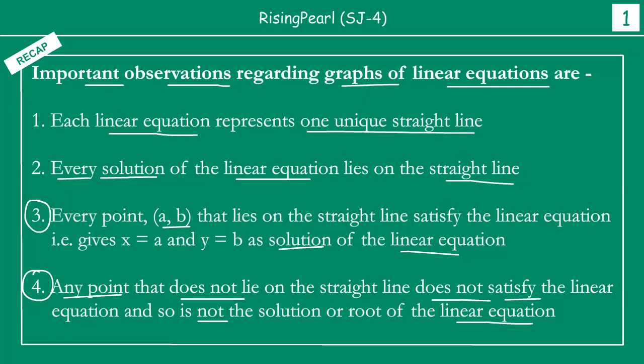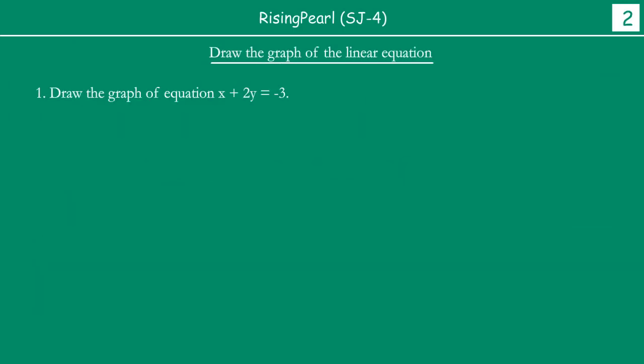So these are some of the things we wanted to talk about. Let us keep our attention on the equation in two variables and the straight line. Now, friends, we are going to take some examples. One of the most straightforward questions you will see is simply: draw a graph of a linear equation, where you are given an equation like this.